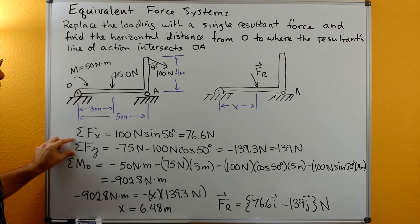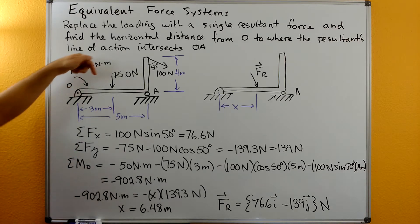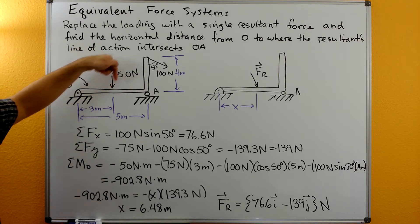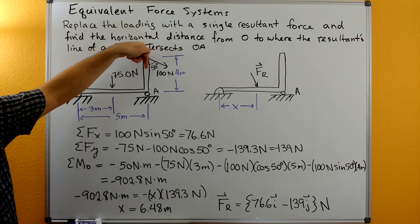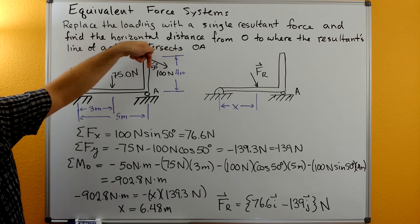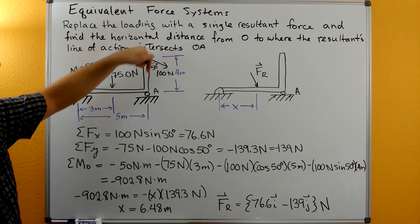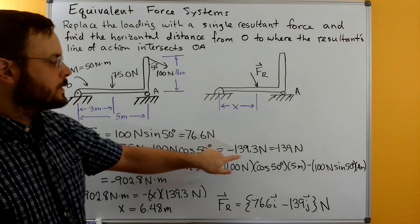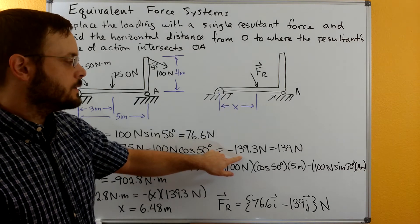We can do sum of forces in the Y direction. Here we'll have the negative 75 and then we'll have the negative 100 times cosine of 50. We're using cosine because the Y side touches the angle, it's adjacent to the angle. Add that all up and we get negative 139 Newtons.